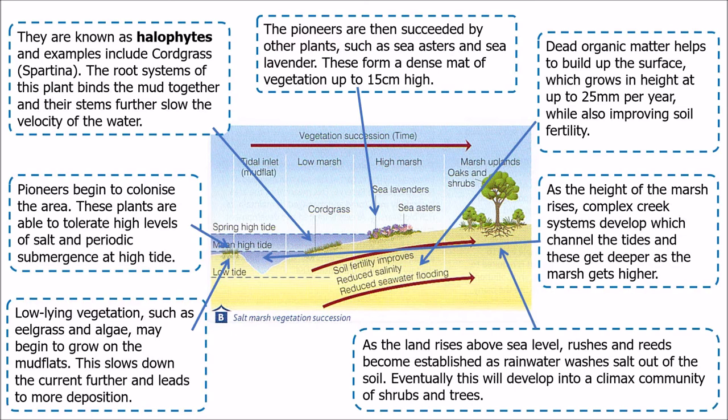Eventually, as with all examples of succession, we will reach a climax community. As rainwater washes some of the salt out of the soil and the land level rises further, those pioneer species and the sea lavenders and sea asters are replaced by trees and shrubs, which form that climax community.